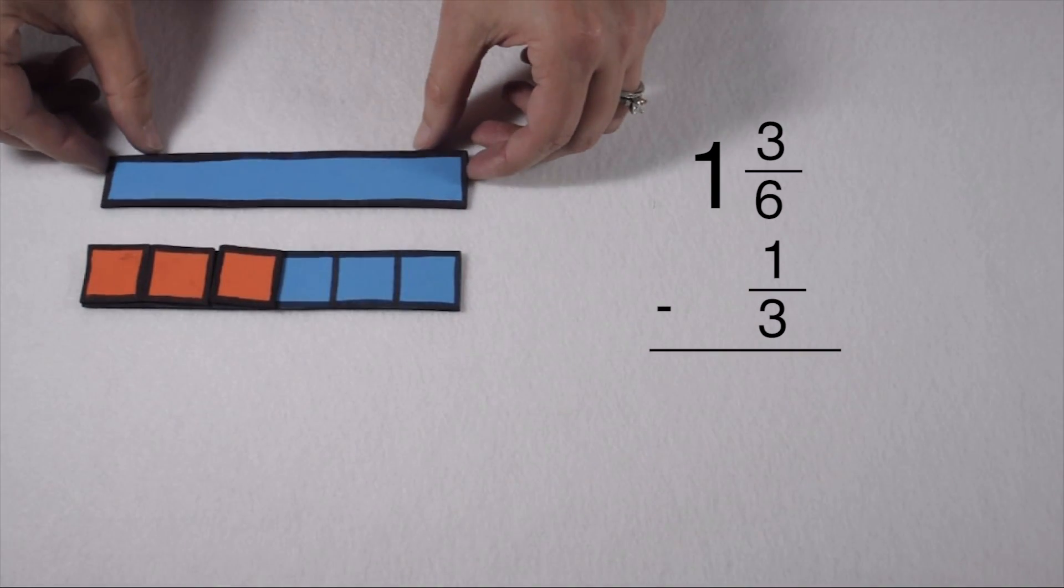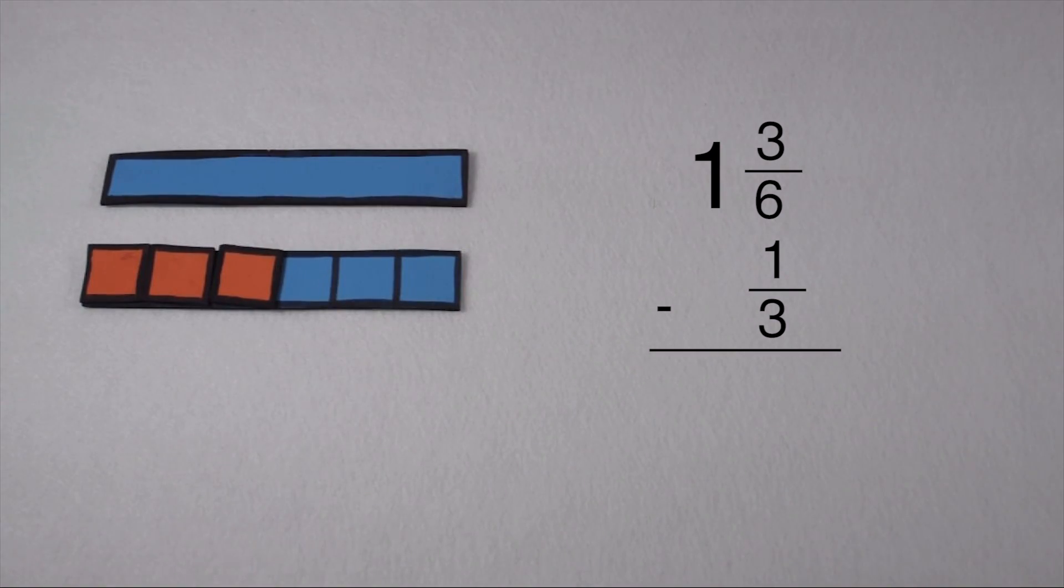I then need to do the same thing with 1 third. To get from 3 to 6, I need to multiply by 2. Since I multiplied my denominator by 2, I need to multiply my numerator by 2 as well. 1 times 2 is 2, so 1 third is equivalent to 2 sixths.